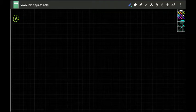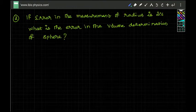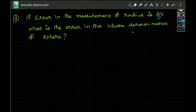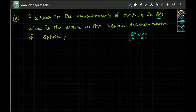The second question: if there is an error in the measurement of radius which is two percent, what is the percentage error in the volume determination of a sphere? The percentage error in volume is change in volume divided by the original volume, into 100. We need to recall that the volume of a sphere is four by three pi r cube.